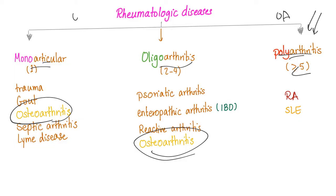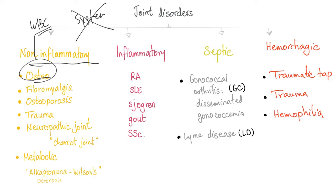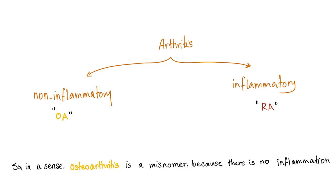Osteoarthritis, by and large, is a local problem — it's a biomechanical problem. Mechanical here refers to wear and tear. So it's not a systemic problem like rheumatoid arthritis. Joint diseases can be non-inflammatory, inflammatory, septic, or hemorrhagic. Osteoarthritis is a non-inflammatory arthritis. You can find some white blood cells in the joint of an OA patient, but systemic inflammation is not what drives osteo — it's a biomechanical process, wear and tear.